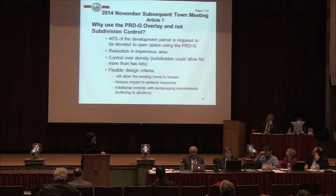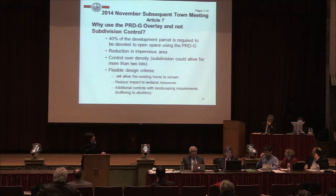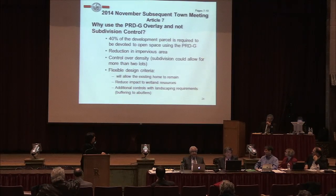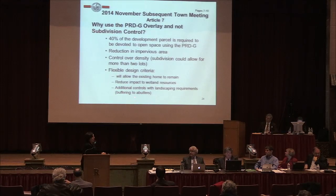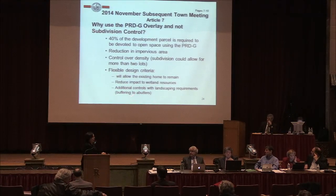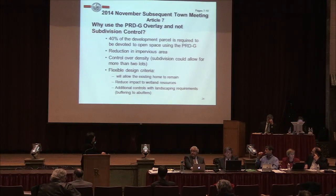The key is the flexible design criteria. The existing home would be able to remain; otherwise it would be demolished and two new homes would be developed. The impact on the wetland resource area is reduced. And the additional controls under PRD zoning include requirements for landscaping that are more stringent than under subdivision, including the buffering to the abutters.